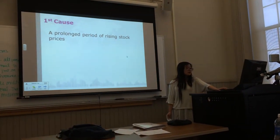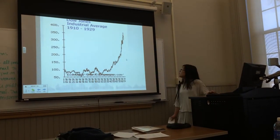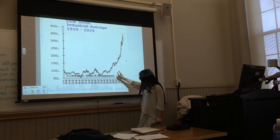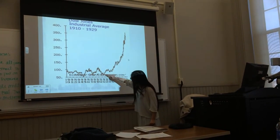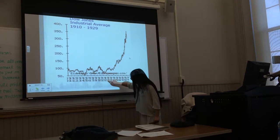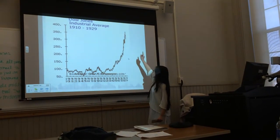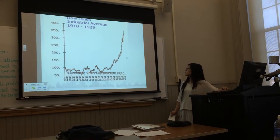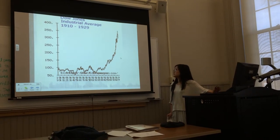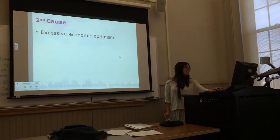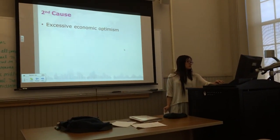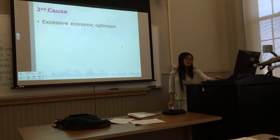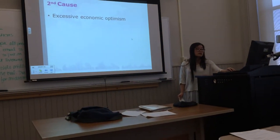The first cause is a prolonged period of rising stock prices. As you can see in this picture, the Dow Jones Industrial Average was increasing leading up to 1929, which means stocks were very valuable. So a lot of investors bought a lot of stocks in the stock market, and they thought the stock price would keep on rising, so they kept on buying stocks.